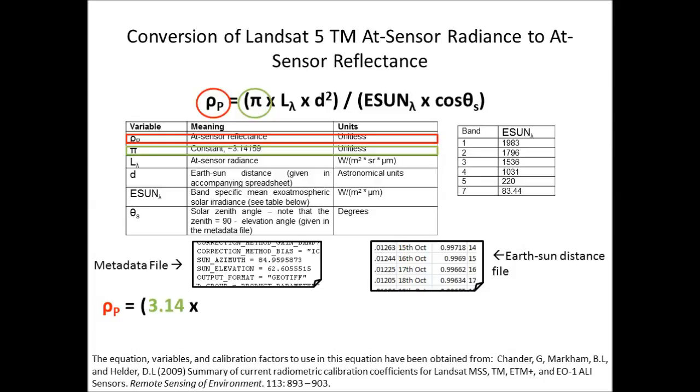The next variable is a constant, pi, which has an approximate value of 3.14.